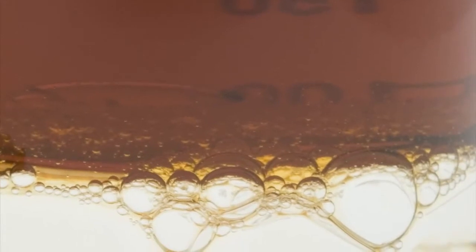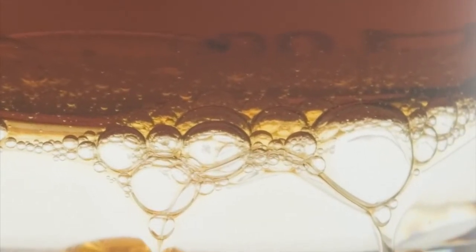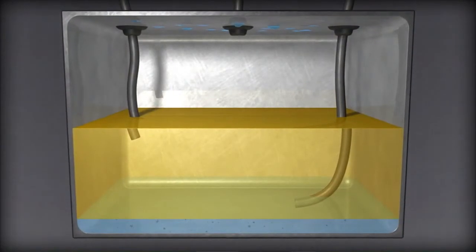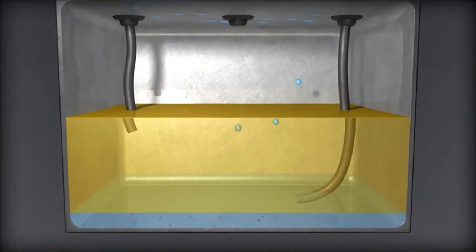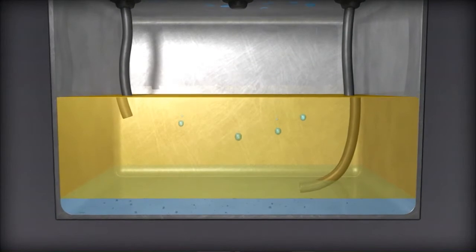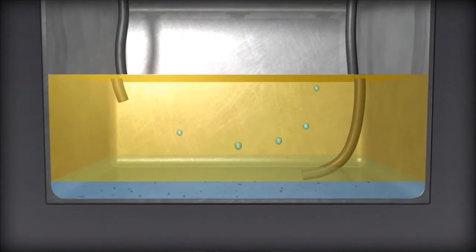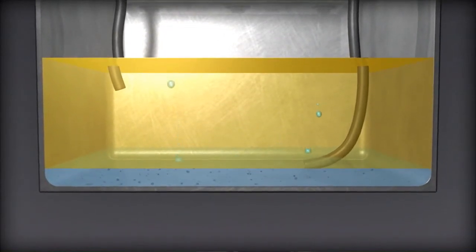Water can be a contaminant in crankcase lubricants since it is a byproduct of the combustion process. It may also enter lubrication systems by condensation, promoted by heating and cooling during operation and storage. In the presence of air, water can promote rust, oxidation, and corrosion of unprotected metal surfaces.